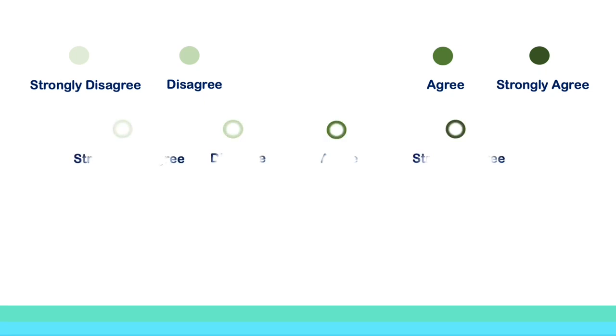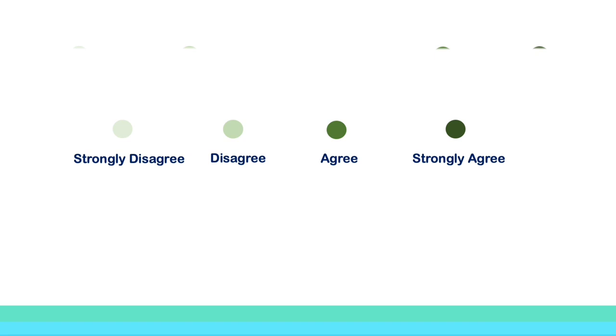Some researchers also use a 4 point scale. This technique is sometimes considered to produce an ipsative measure where no indifferent option is available. Meaning, the respondents are not given a neutral option. They need to reflect their leaning on the statements whether towards agreement or disagreement.